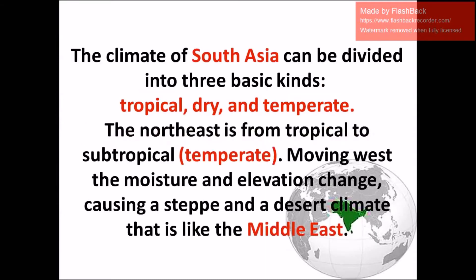The climate of South Asia can be divided into three basic kinds: tropical, dry, and temperate. The northeast ranges from tropical to subtropical, also called temperate zones, moving west as moisture and elevation change. In South Asia, mountains cause a steep and desert climate similar to that of the Middle East.